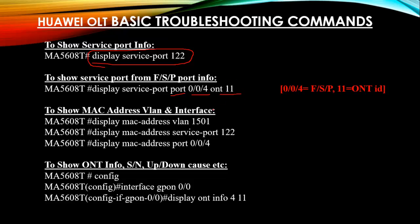To show MAC address by VLAN and interface or service port, you can view MAC addresses three ways. Use 'display mac-address vlan 1500' — 1500 is your client VLAN — to see all MAC addresses upstream and downstream, including all ONTs configured on that VLAN. Use 'display mac-address service-port 122' to see only the MAC address of the ONT configured on that specific service port.